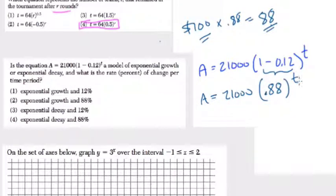So if t is a larger number, like 3, you'd have 21,000 times 0.88 three times, right? And that would just mean you lost 12%, and then another 12% of that, and then 12% of the new total, and so forth. So this is called exponential decay.